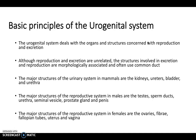The major structures of our urinary system include kidneys, ureters, bladder, and urethra. The major structures of the reproductive system differ in males and females. In males: testes, sperm ducts, urethra, seminal vesicles, prostate gland, and penis. In females: ovaries, fimbriae, fallopian tubes, uterus, and vagina.